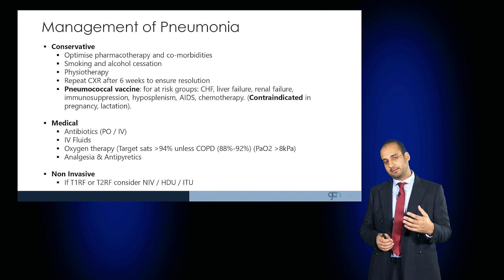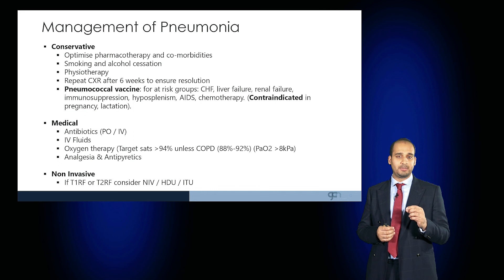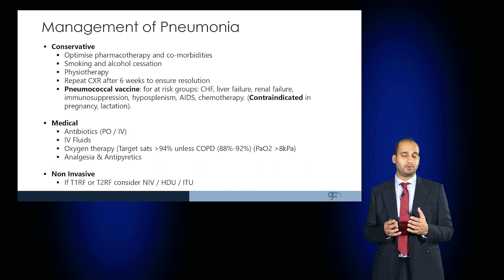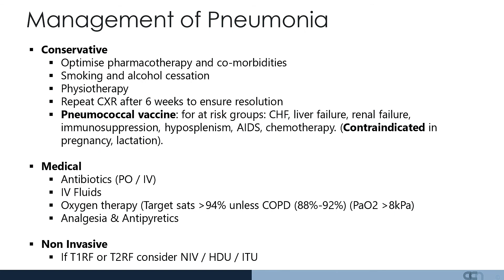Medically we give antibiotics, which can be oral or intravenous, as well as intravenous fluids, and oxygen therapy to ensure saturations are kept above 94%, unless there is a specific indication where the saturation range can be kept between 88 and 92%. We also give these patients good analgesia and antipyretics, and if patients deteriorate, early escalation using non-invasive ventilation such as NIV or CPAP, or transferring the patient to a high dependency or intensive care setting for more advanced respiratory support, can be life-saving.